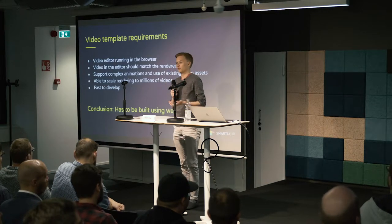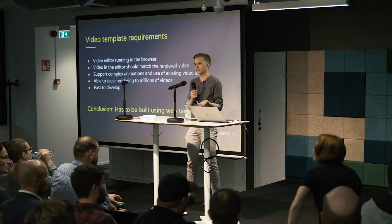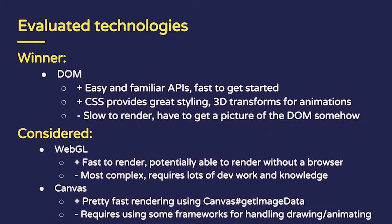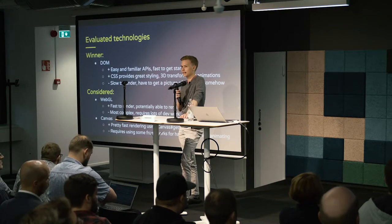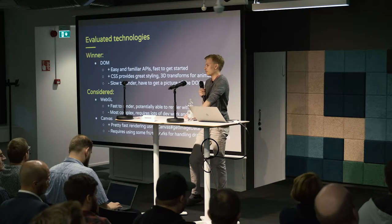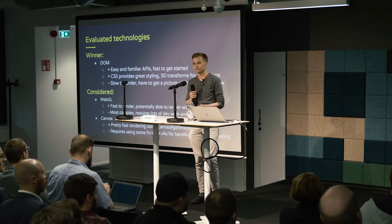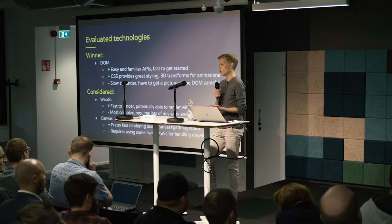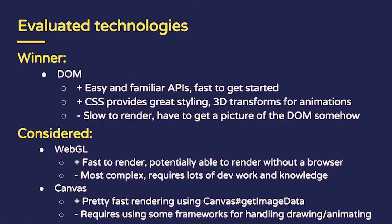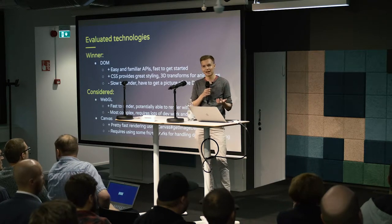Keeping these limitations in mind, we concluded that rendering both in the browser and the backend should be implemented with web technologies, so we can use the same renderer for both. We decided to go with the DOM — basic DOM elements like divs, videos, and images that we animate with JavaScript and CSS. The DOM APIs are very complete, everyone is familiar with them, so there's practically no learning curve. CSS also has lots of complicated features such as blending modes and 3D transforms for complex animations. The most obvious issue is that it's slow to render, since there are no native APIs to screenshot the DOM.